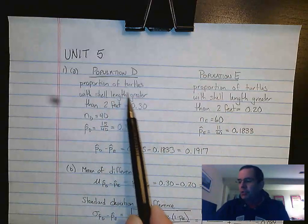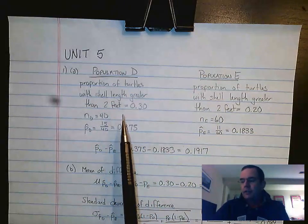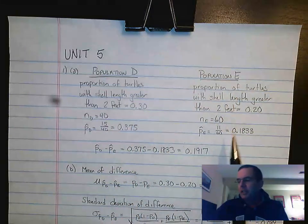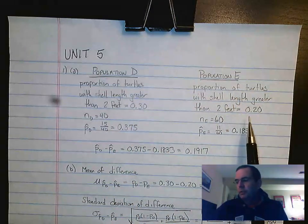One gives a proportion of turtles with a shell length greater than two feet, and that's 0.3. For Population E, the same proportion is 0.2.